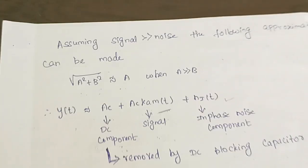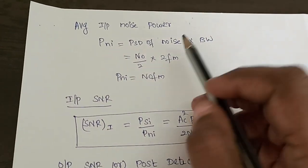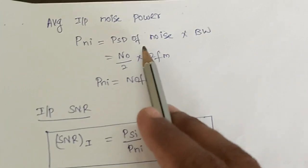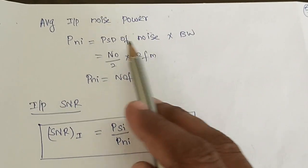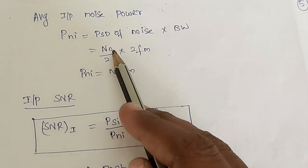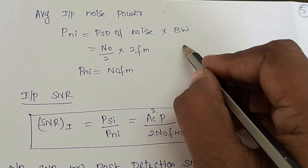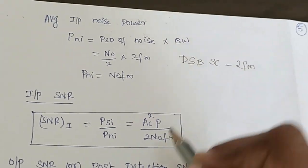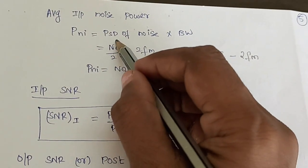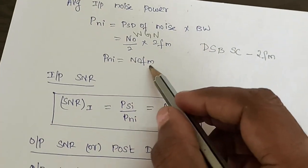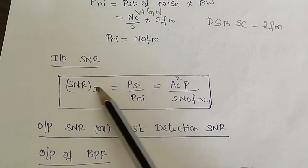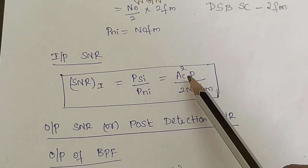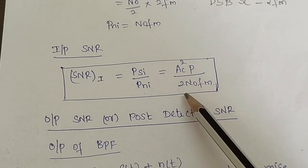Next we find average input noise power. The formula is PSD of noise multiplied by bandwidth. The power spectral density of white Gaussian noise is N0/2, and the bandwidth of DSBSC is 2Fm. So input noise power is N0/2 × 2Fm = N0·Fm. The input signal to noise ratio is then signal power divided by noise power: Ac²P / (2N0·Fm).